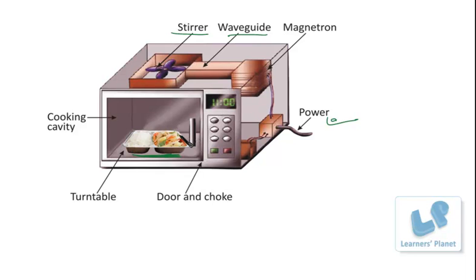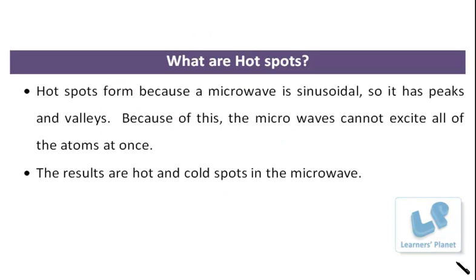So how come if we warm up a piece of pizza in the microwave for a longer than necessary period of time, only some parts of the pizza burn? This is because of the hotspots. Now what is meant by hotspots? Let us see. Yes my dear friends, what are hotspots? Hotspots form because a microwave is sinusoidal. Now what does sinusoidal mean here? It means having a succession of waves or curves. Let me show you a picture.